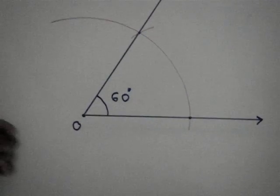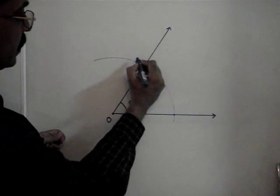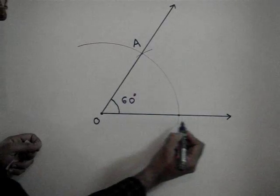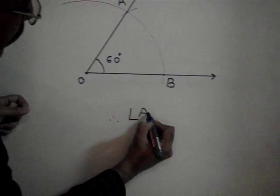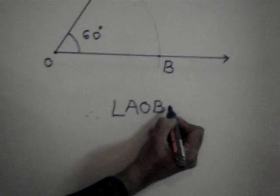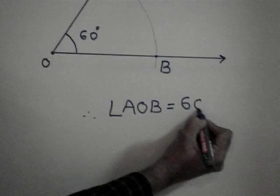We can check this with the help of a protractor. I will give names to these points: A here and B here. Therefore, angle AOB is of the measure 60 degrees.